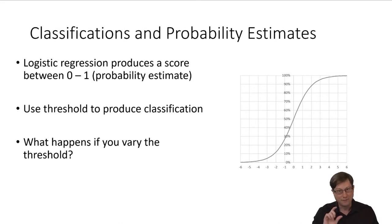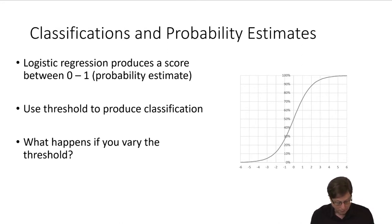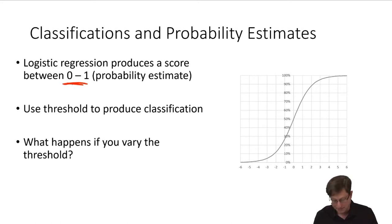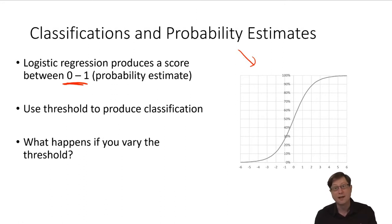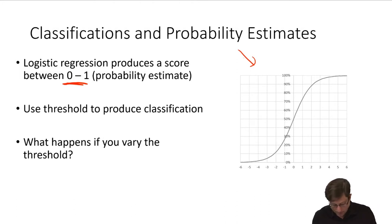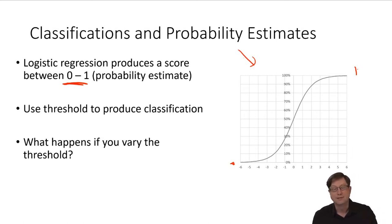Just a quick review: logistic regression produces a score between 0 and 1, which we call a probability estimate, because it takes the linear model and passes it through the sigmoid function. If this stuff sounds unfamiliar, go watch the lecture again and do your assignments. So you get this score between 0 and 1, and then you use a threshold to produce the classification.